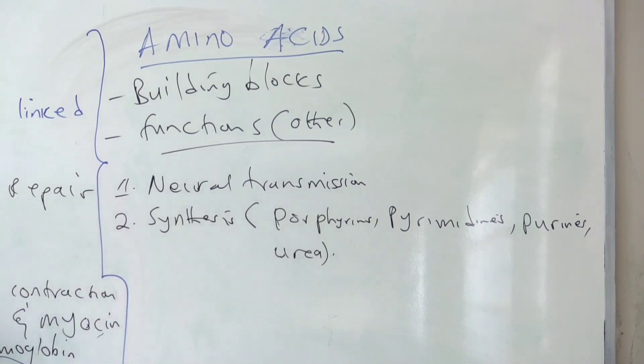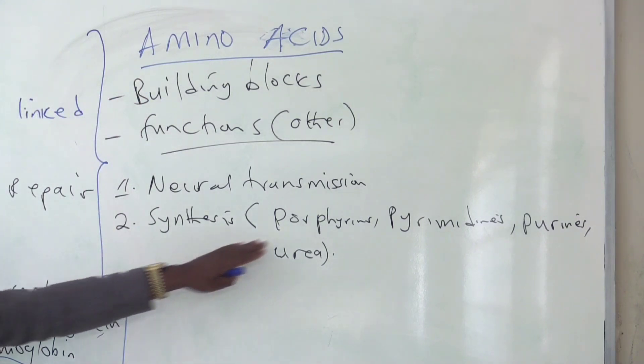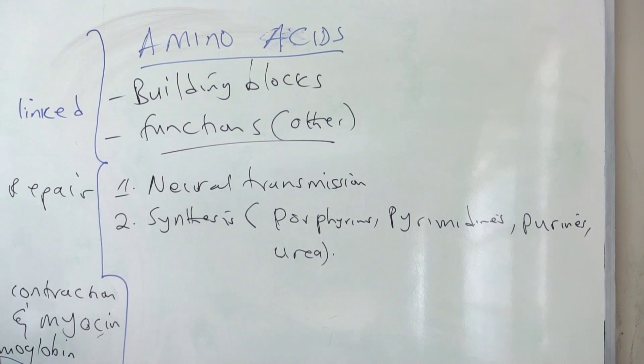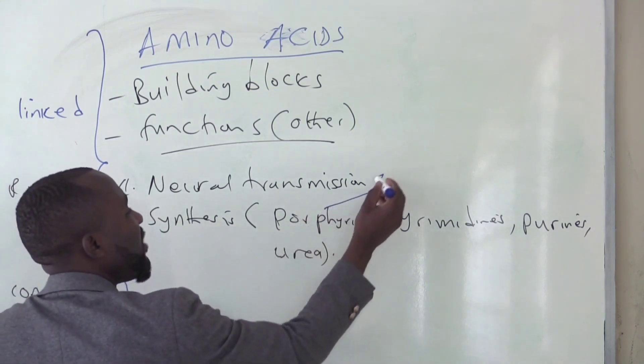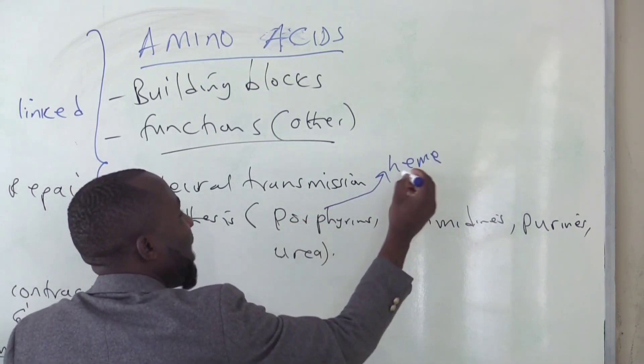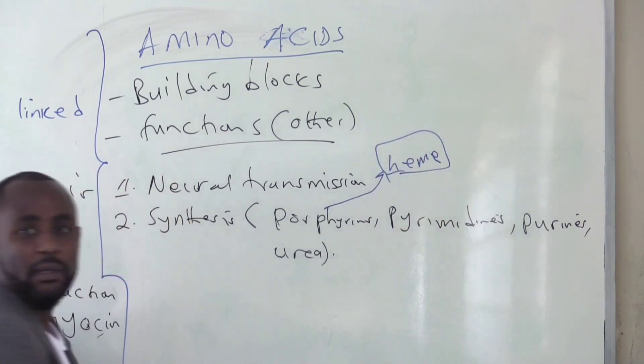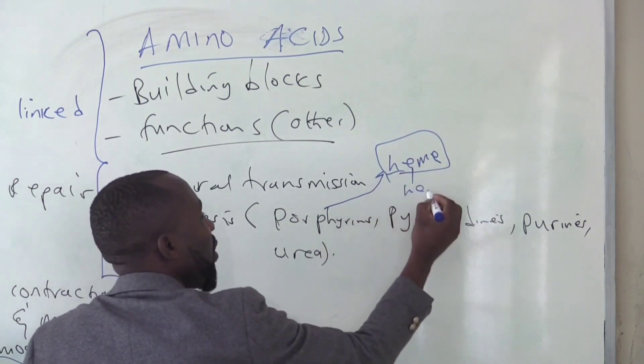Let me explain a bit on the substances or compounds, molecules that are synthesized using amino acids. The derivatives of amino acids and some amino acids, they help in making porphyrins. This porphyrin is what is used to make the heme. Now, the heme group is what makes up hemoglobin.